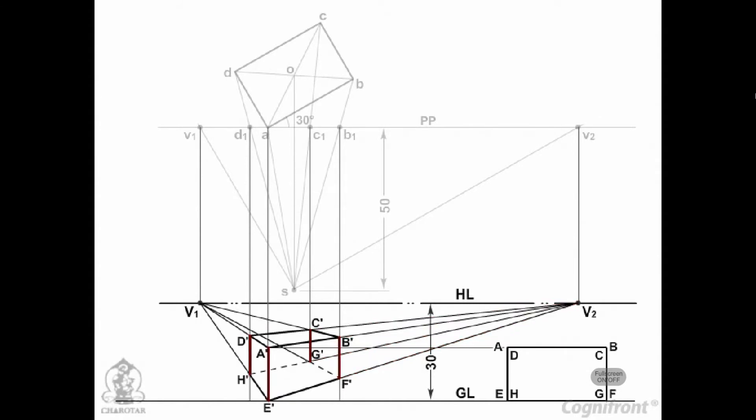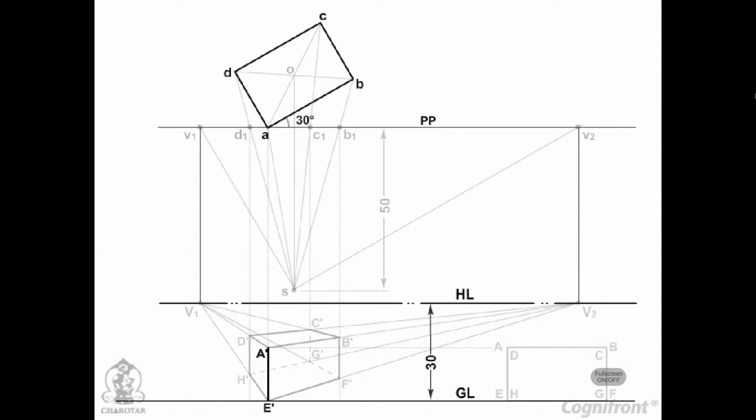Perspectives of vertical edges AE, BF, CG, and DH will remain vertical. As AE is in the picture plane, its perspective will be equal to the true length, and the end E will lie on GL.